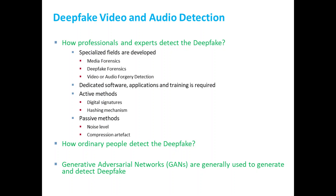Deepfake techniques normally use machine learning algorithms — advanced algorithms called Generative Adversarial Networks, or GANs. GANs have an architecture of two components: a generator, which generates audio, video, or images, and a discriminator, which discriminates between real images and fake generated images. GANs can be used for both purposes — generating deepfake content from audio or video, and also determining whether video or audio is real or fake.